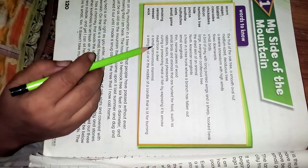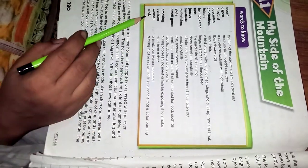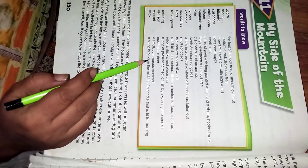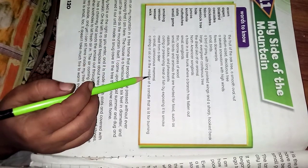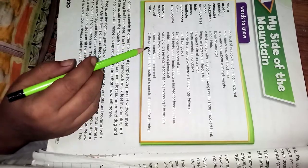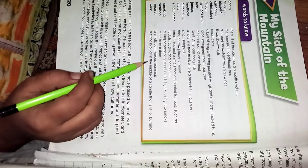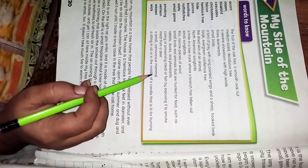Venison: meat from a deer, hiran ka gosht. Weasel: a small carnivorous mammal. Yani, chhota gosht khane wala mammal.